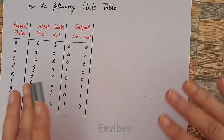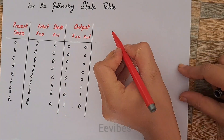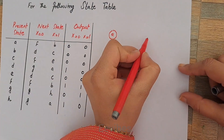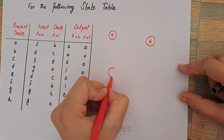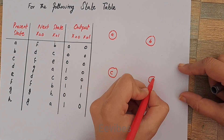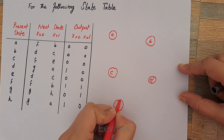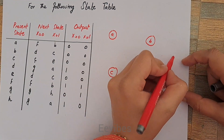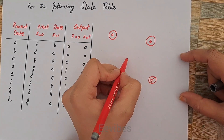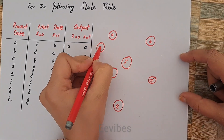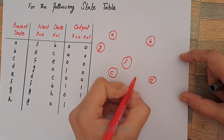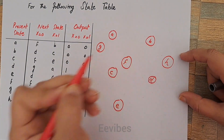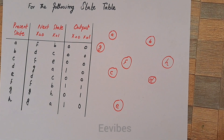In the first part, you are not supposed to reduce the table. So I will draw the 8 states: A, B, C, D, E, F, G, and H. You can draw the nodes randomly — I have drawn these nodes or states randomly.